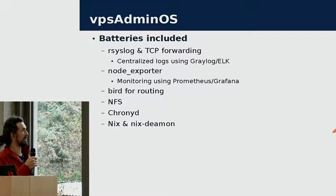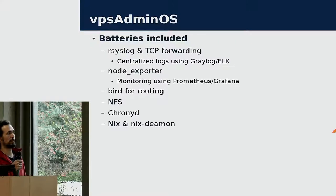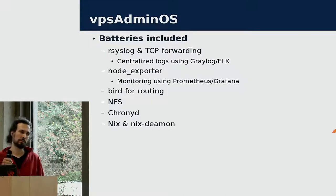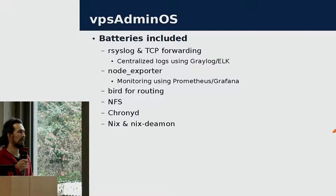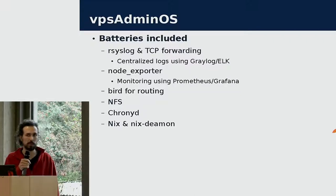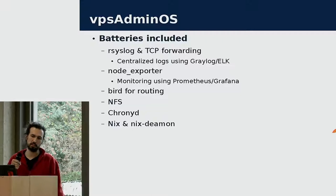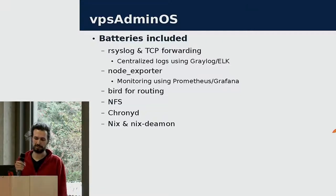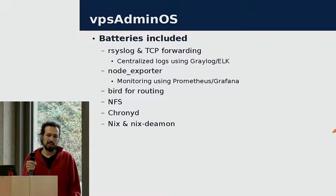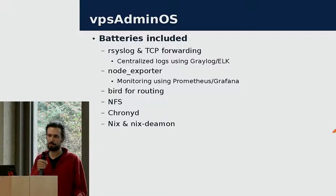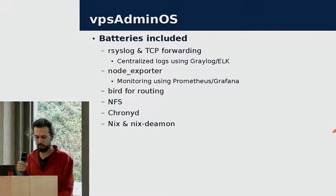Some batteries included in the OS: rsyslog with TCP forwarding to Graylog to collect logs — after machine boot you have the full log of the boot on the central side. We also use node exporter with Prometheus and Grafana, Bird for flow routing, NFS to mount network storage and restore backups, and chronyD for time. Of course, Nix and nix-daemon — quite useful because when you log into a node and find some software is missing, you can just enter a nix-shell, and after you quit, collect garbage and the system is as before with no cruft left over.